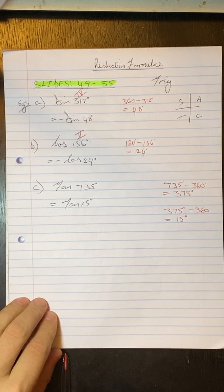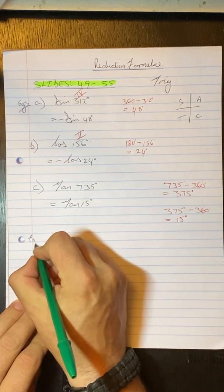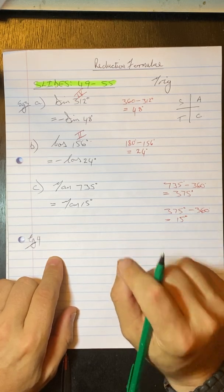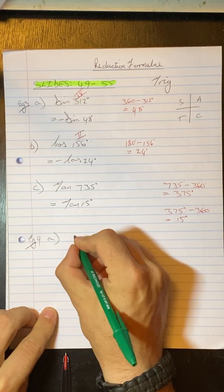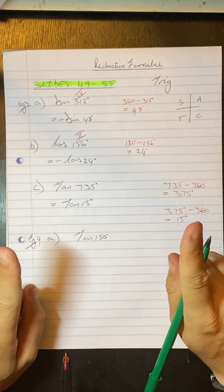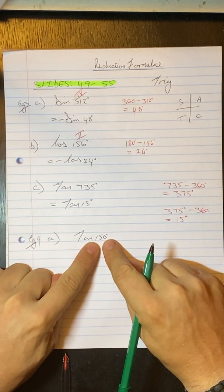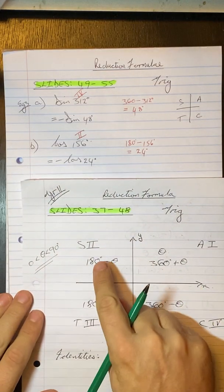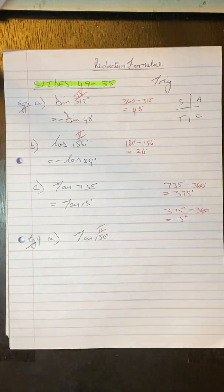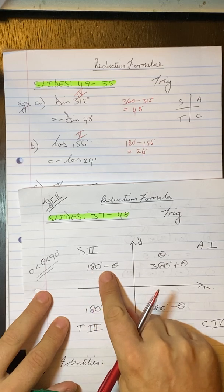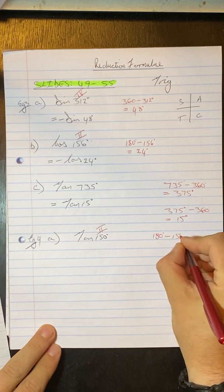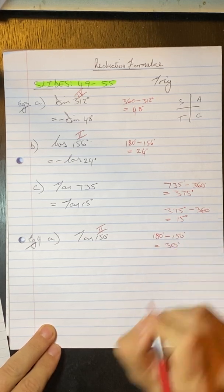Now if we look at example 4. Example 4 is saying without using a calculator evaluate the following. So question A. Tan 150 degrees. Okay. So without the use of a calculator. First of all 150 degrees remember is in the second quadrant. So we know that this is in the second quadrant. How do we get into the second quadrant? It's 180 minus something. So over here 180 degrees minus 150 will give us 30. Okay.